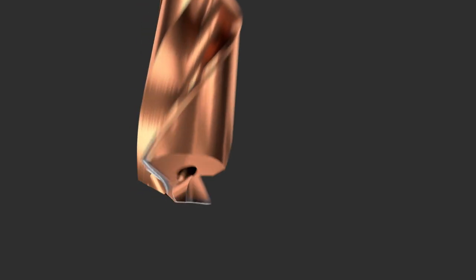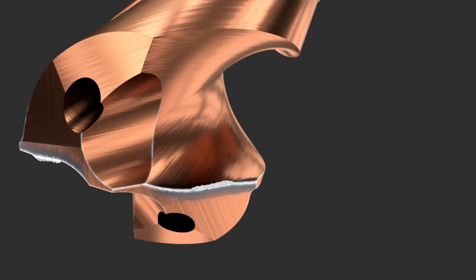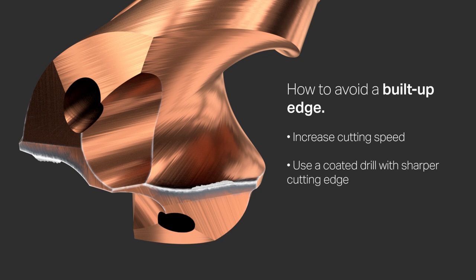When examining a solid carbide drill, note that there are many different types of tool wear. A built-up edge can be caused by any of a number of factors. You can avoid this condition by increasing the cutting speed, using a coated drill with sharper cutting edge, and using an external cutting fluid with a good percentage of oil.